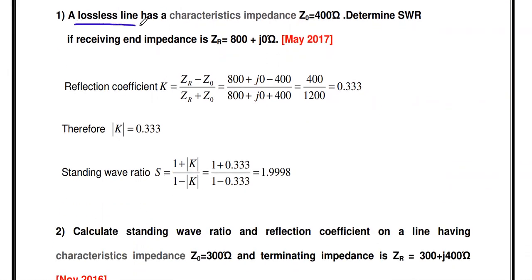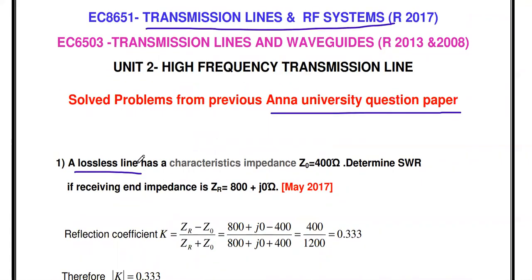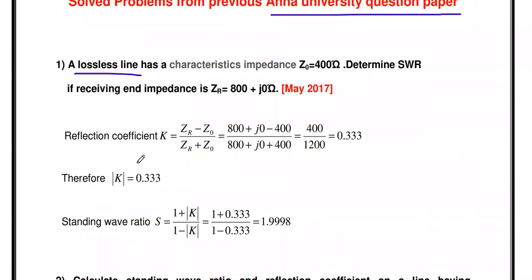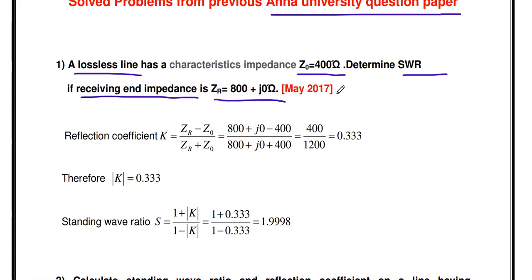The first question is about a lossless line — the high frequency transmission line is called a lossless line, zero dissipation line, or dissipationless line. A lossless line has a characteristic impedance Z0 equal to 400 ohms. Determine the SWR (standing wave ratio), sometimes also written as VSWR — both are the same. The receiving end impedance ZR equals 800 + j0. This is a May 2017, two mark problem. The standing wave ratio is a very important problem from this unit.